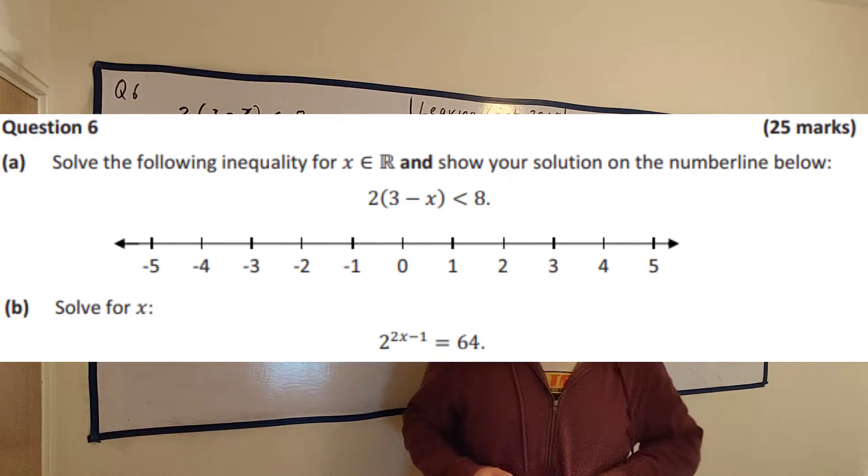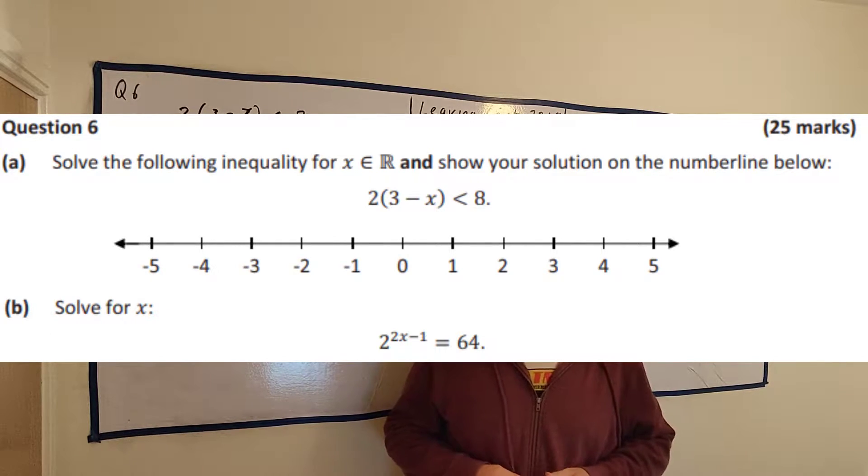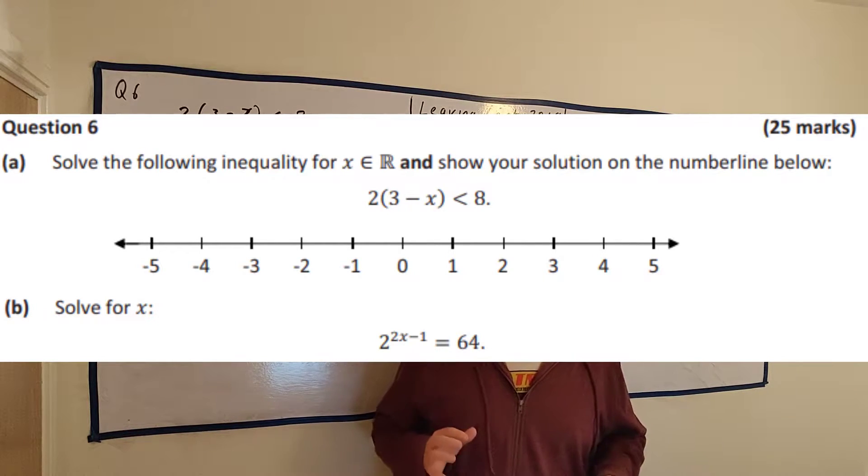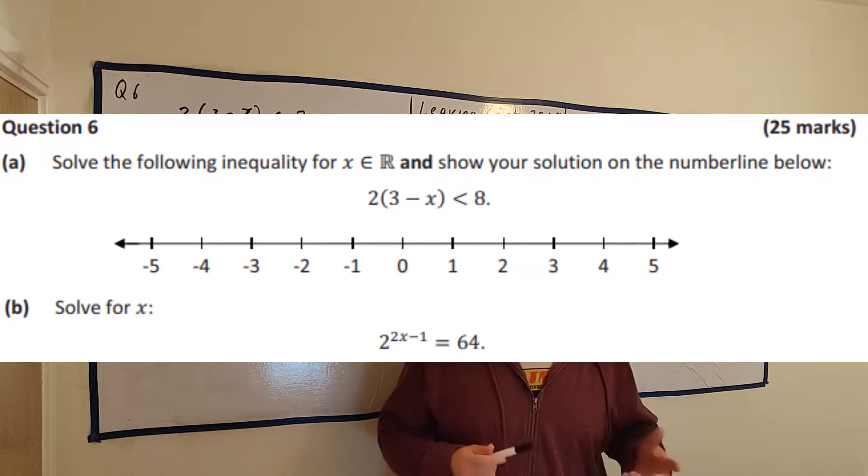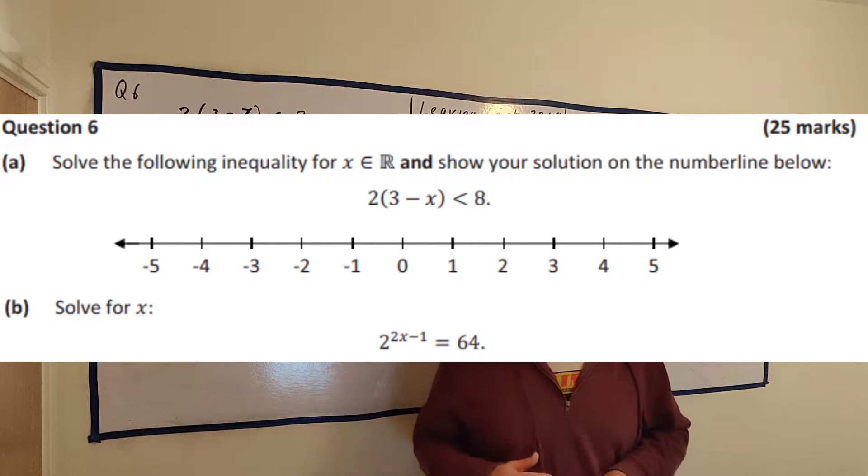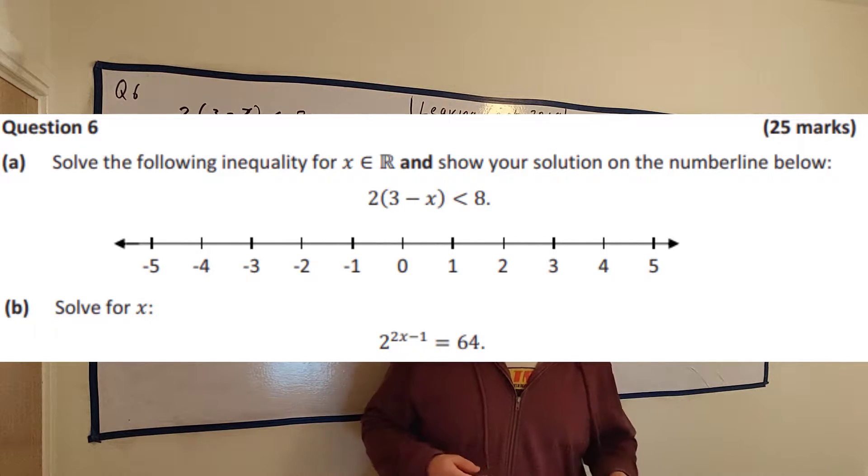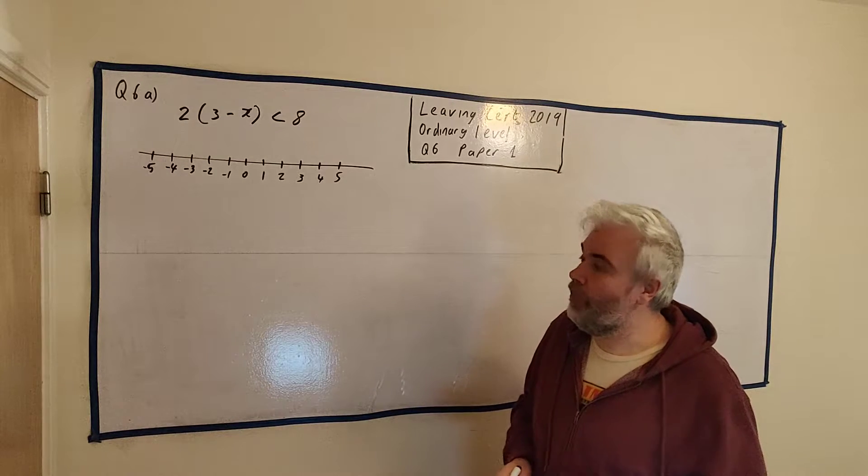This is question 6 of the 2019 Ordinary Level Leaving Certificate Paper. You can find a link to the image of this question in the description below. It's made up of two parts. Part A asks us to solve this inequality and to draw your answer on that number line. Part B asks us to solve a different algebra question.